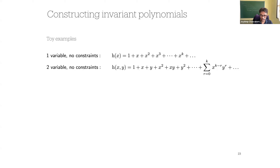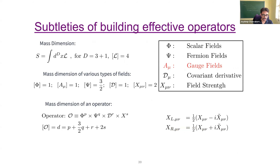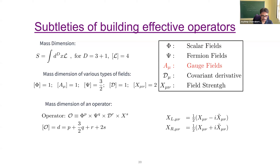Student question: Could you re-explain how we prepare the operator class? Answer: The operator class is defined by the different choices of p, q, r, s for a given dimension d in O = φ^p ψ^q D^r X^s. All combinations give the large variety of operator classes. Within an operator class, different specific choices of which ψ, φ, X (i.e., which standard model fields fill those slots) give individual operators. Those invariant under local symmetries are kept; others are rejected.